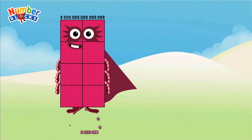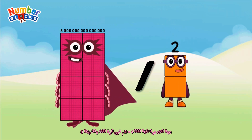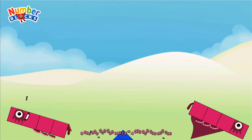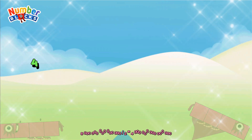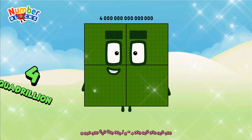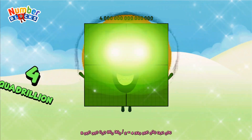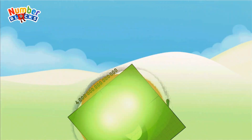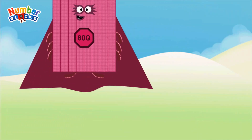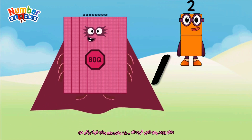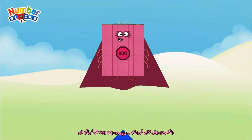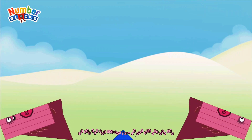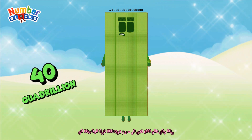8 quadrillion divided by 2 equals 4 quadrillion. 80 quadrillion divided by 2 equals 40 quadrillion.